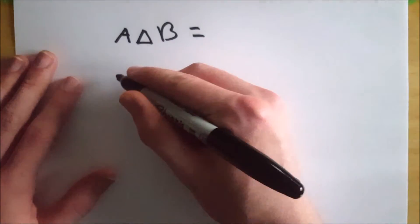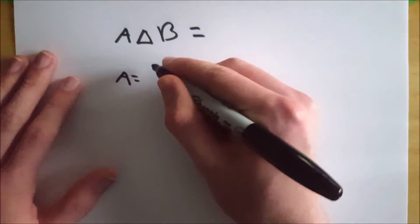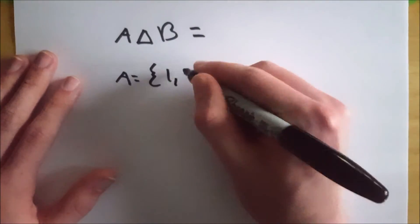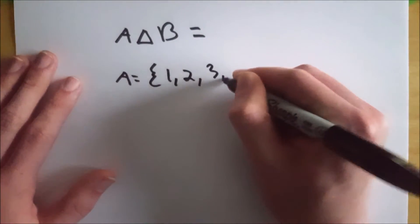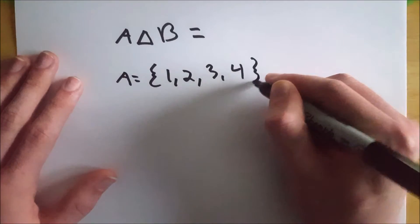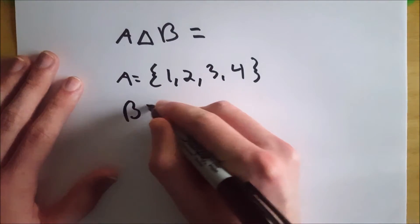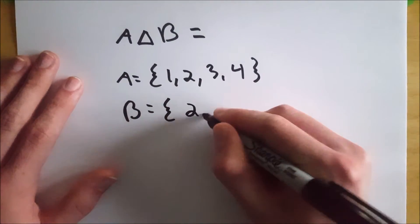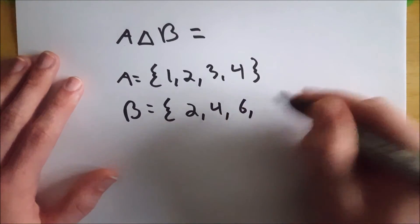So let's write out this example. Let's say that set A contains 1, 2, 3, and 4. And let's suppose that B is equal to 2, 4, 6, and 8.